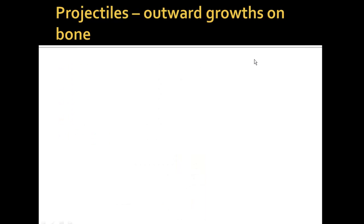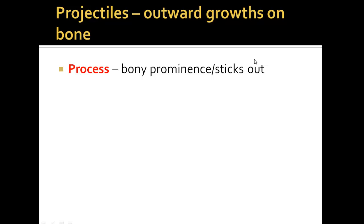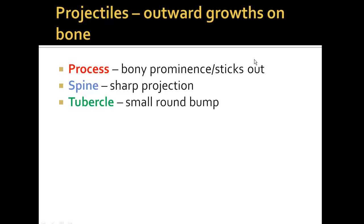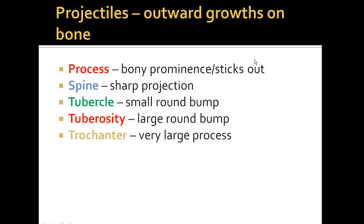The opposite of depressions are projections — outward growths of bone. The first is a process; you have a lot of these, such as the olecranon process, the bone that makes the main elbow and sticks out. A spine is a sharp projection — by definition you have a spine on your shoulder blade, your scapula. There are tubercles, which are small round bumps, and tuberosities, which are large round bumps. The largest are trochanters — you have two trochanters on your femur, the greater and the lesser trochanter. In between those two trochanters is a ridge called the intertrochanteric crest. There's also a crest on the top of your ilium called the iliac crest.